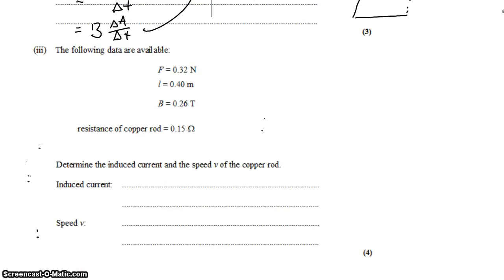Finally, we want to perform a little calculation with what we have here. We know that the force that we're pulling the rod with is 0.32 newtons, we know the length of the rod, we know the magnetic field strength, and we know the resistance of the rod. We want to use this information to get the induced current and the speed of the rod.